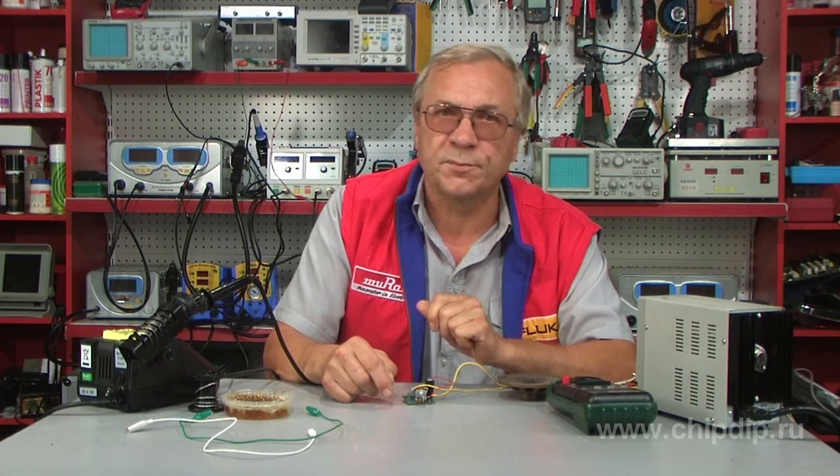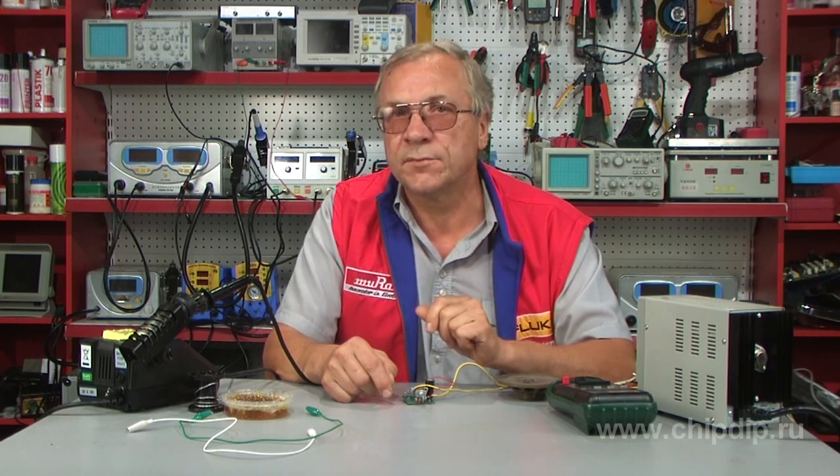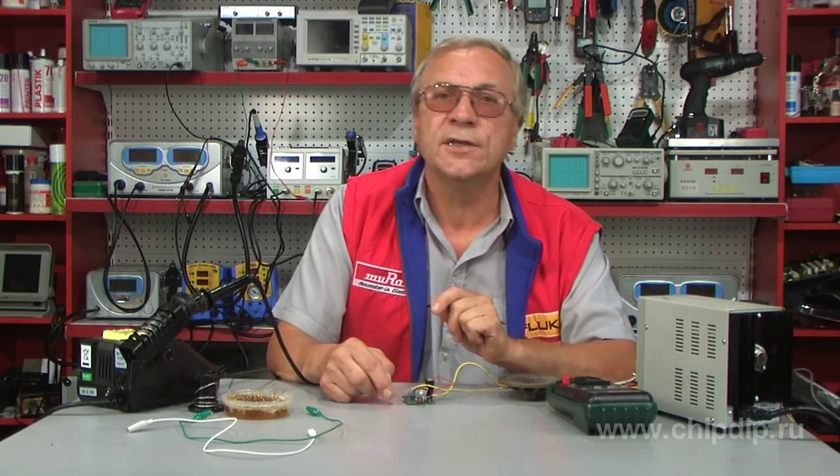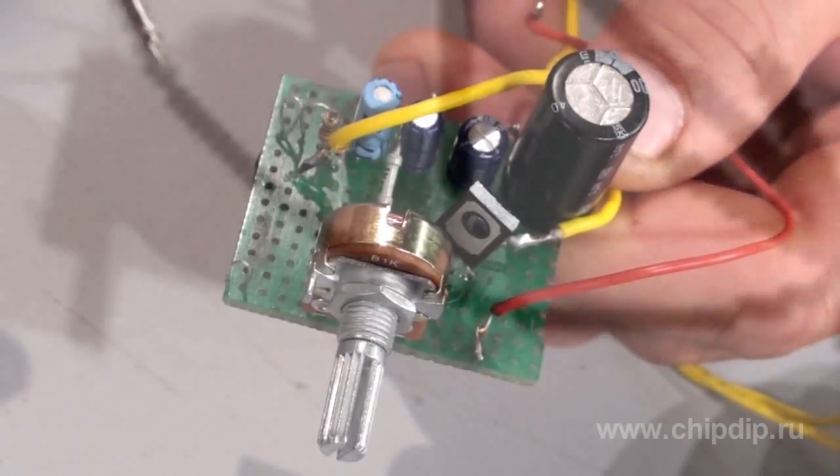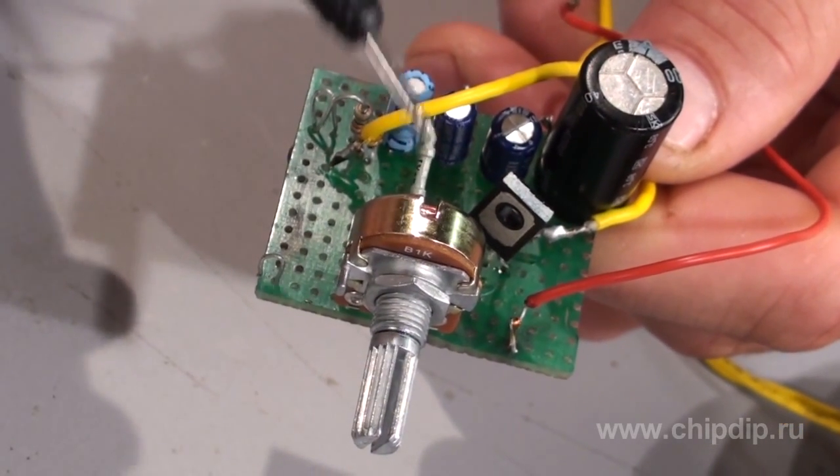Avalanche transistors are generally used in pulse generators. The operation principle of a generator based on the avalanche transistor is the following. Coupled in series, the avalanche transistor and the load are connected in parallel to the capacitor, which is charged through the resistor.